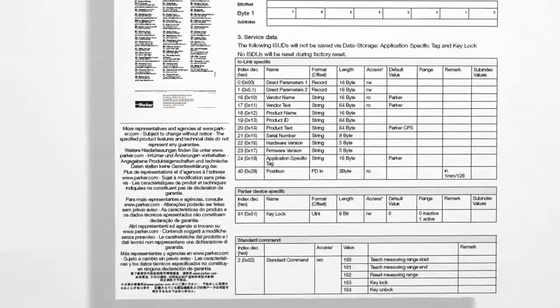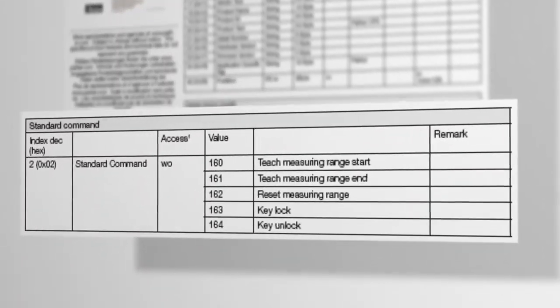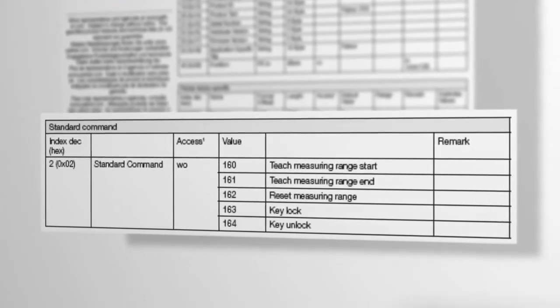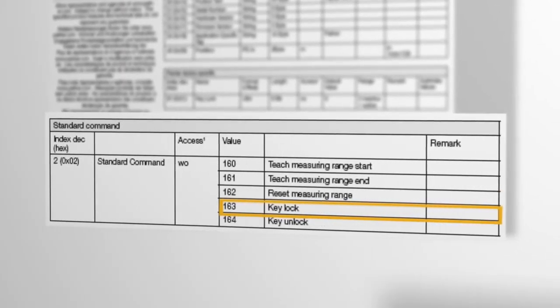If using the IO link version of the Parker CPS, the measuring range can be configured using parameter commands and the teach button can also be locked out. Refer to the installation guides for more details.